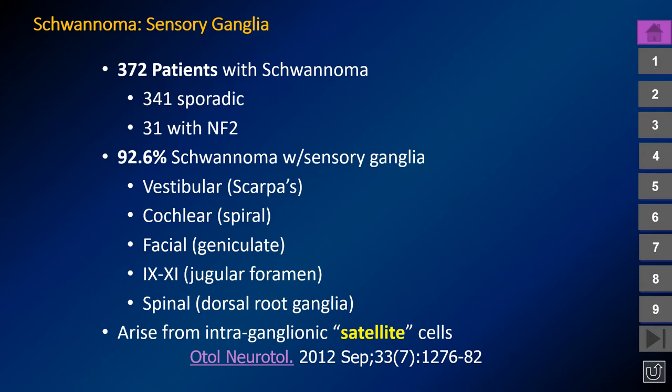Literature from 2012 presenting a careful review of 372 patients with schwannoma found that more than 90% seemed to be co-located with the sensory ganglia — the vestibular or Scarpa's ganglion, the cochlear or spiral ganglion, and the facial or geniculate ganglion — supporting the notion that schwannomas arise from sensory ganglia.